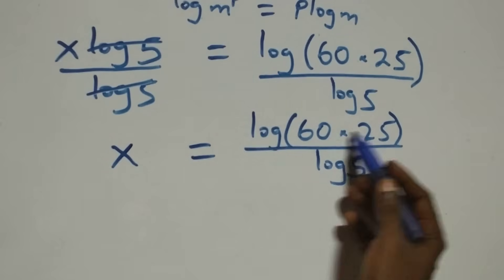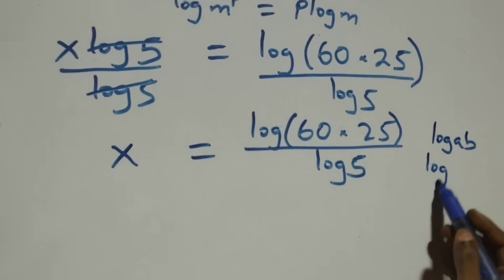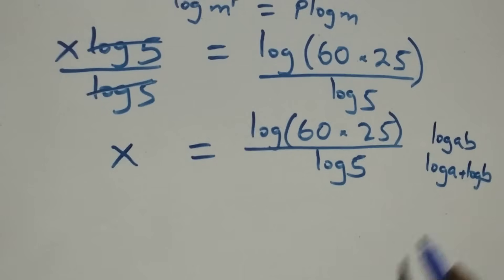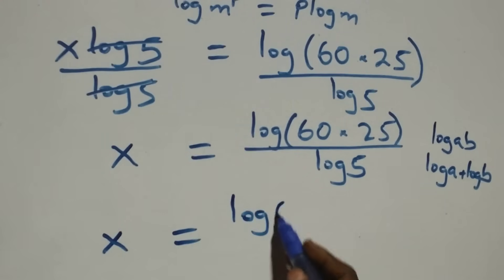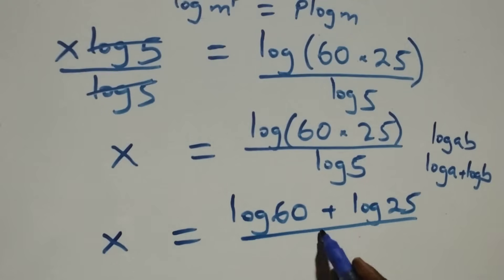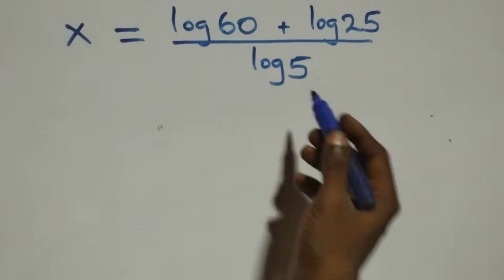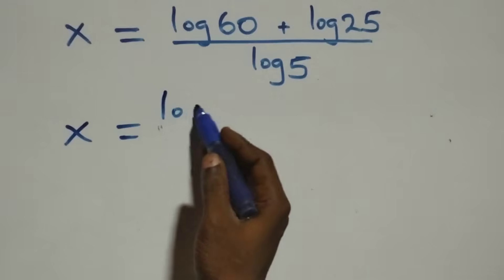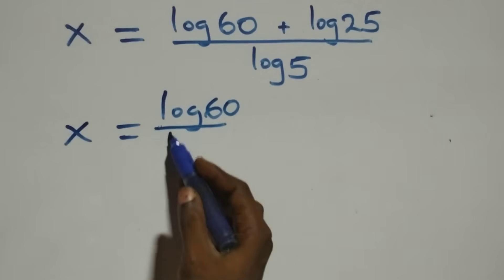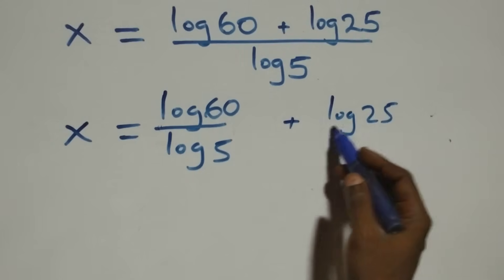Next we apply the log product rule: log of a times b is the same as log a plus log b. So this becomes x equals log 60 plus log 25, all over log 5. We separate this into two fractions: x equals log 60 over log 5, plus log 25 over log 5.